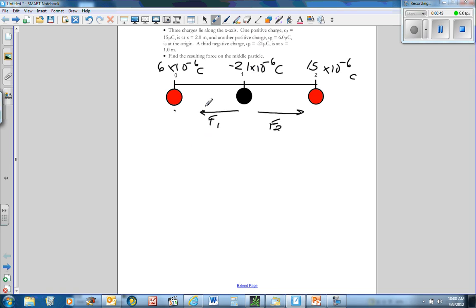We want to find the net resulting force on this middle particle from these two. Well, the one at 0 is pulling it to the left, the one at 2 meters is pulling it to the right. And so I have to use Coulomb's law twice.